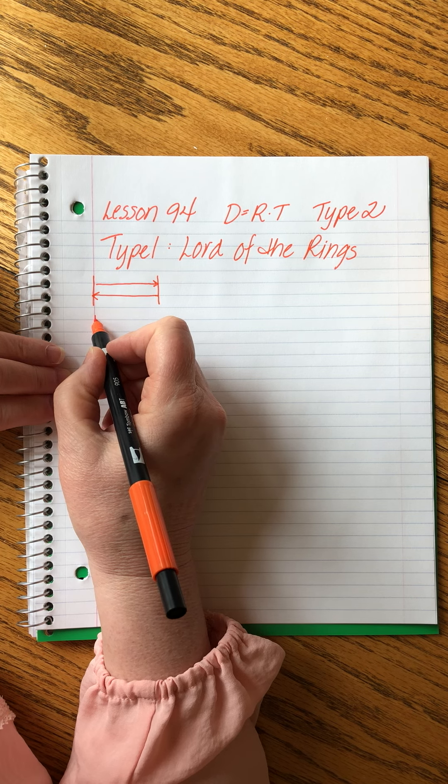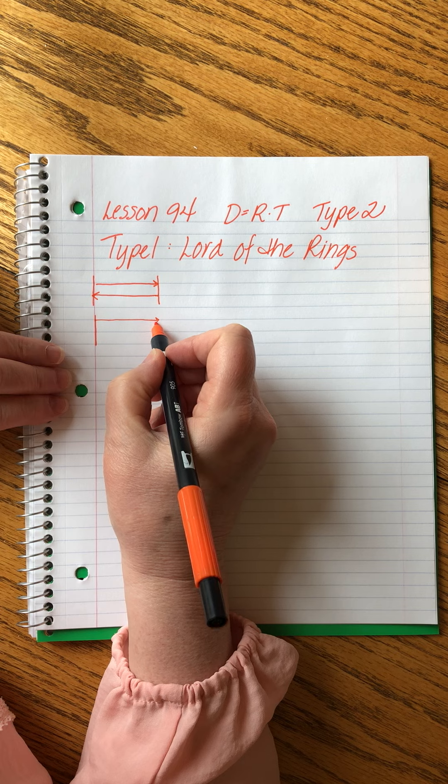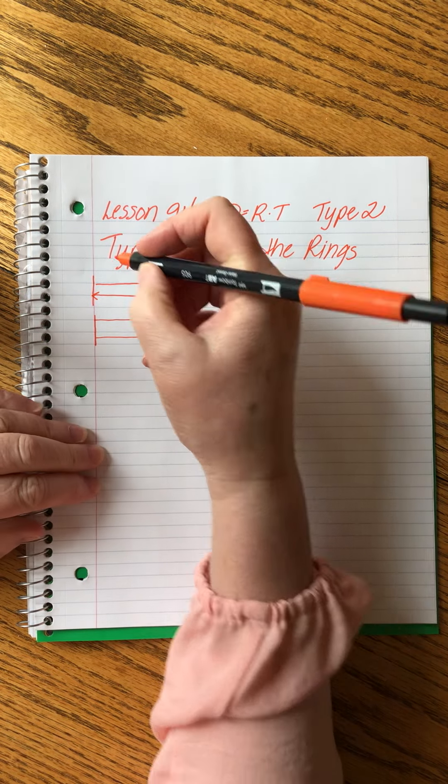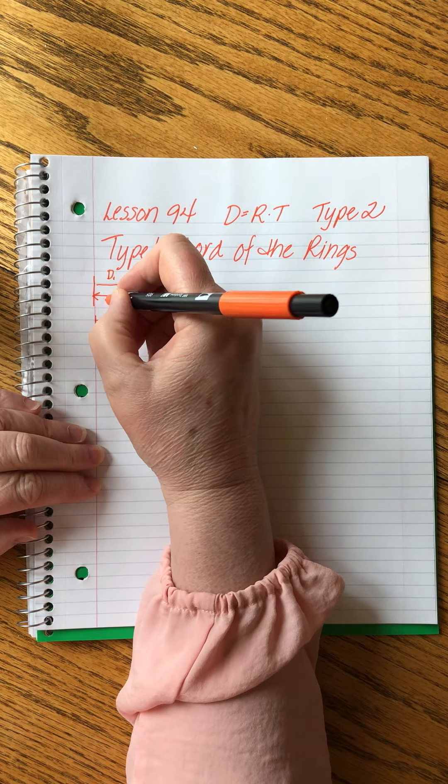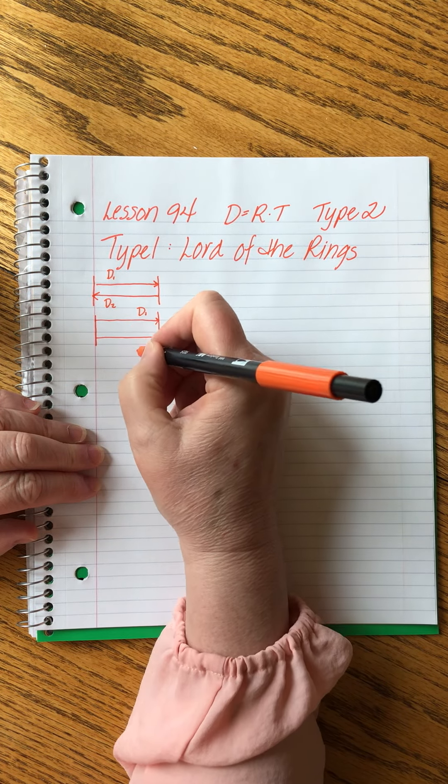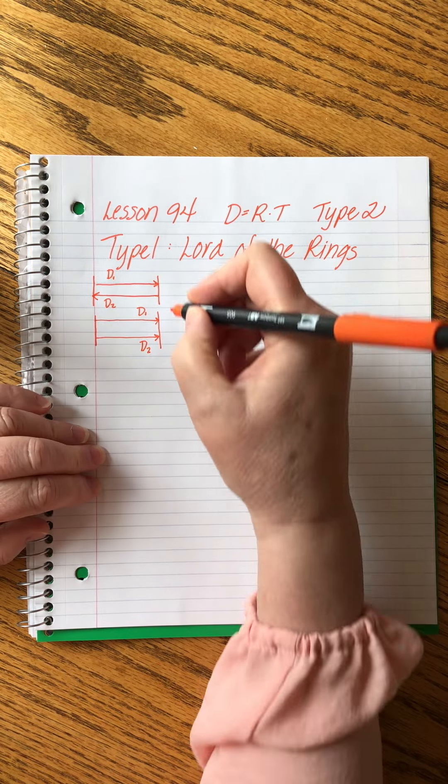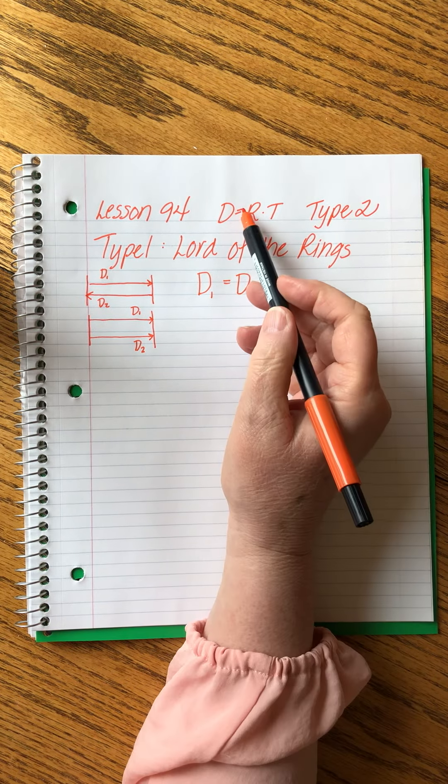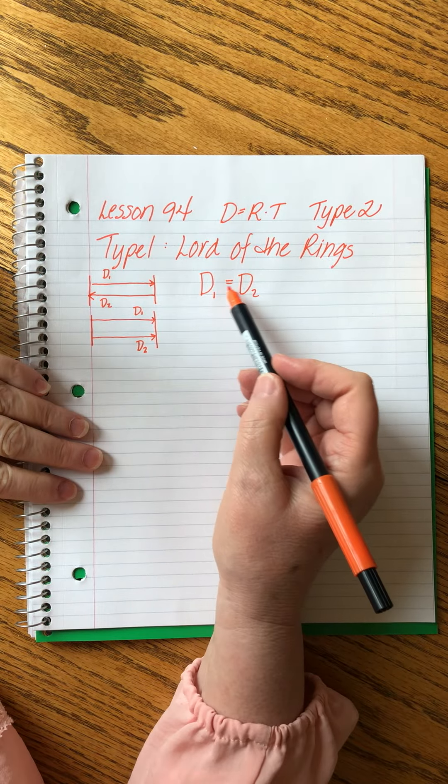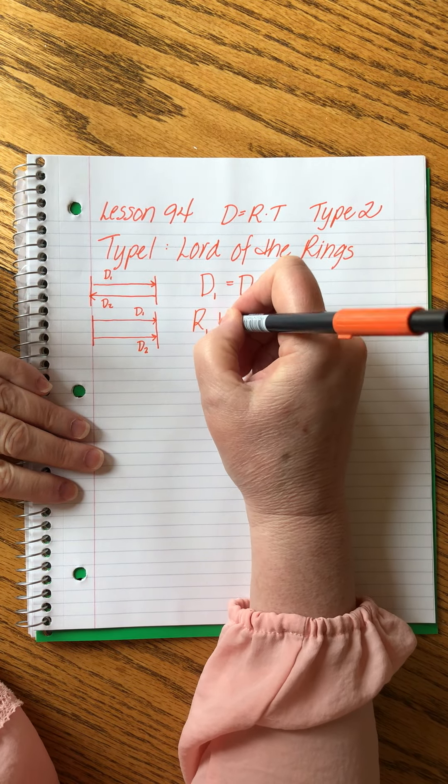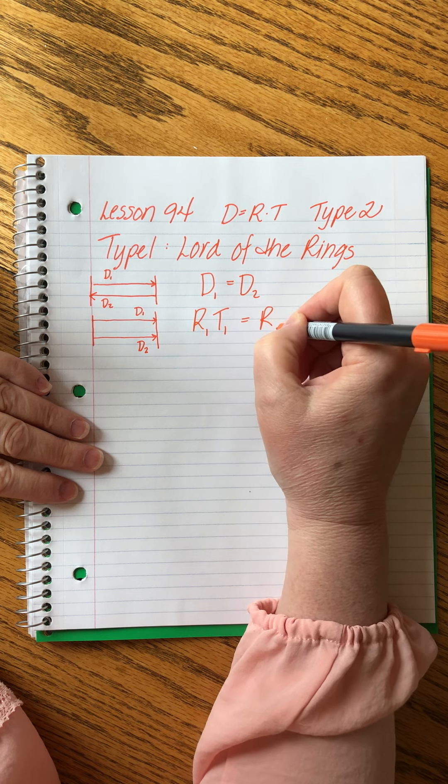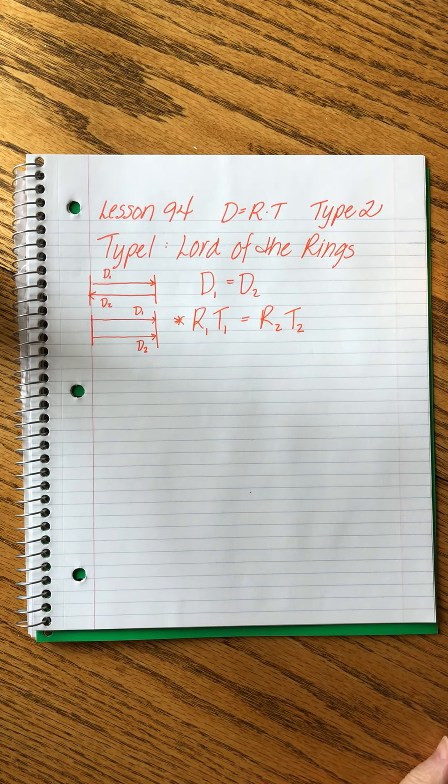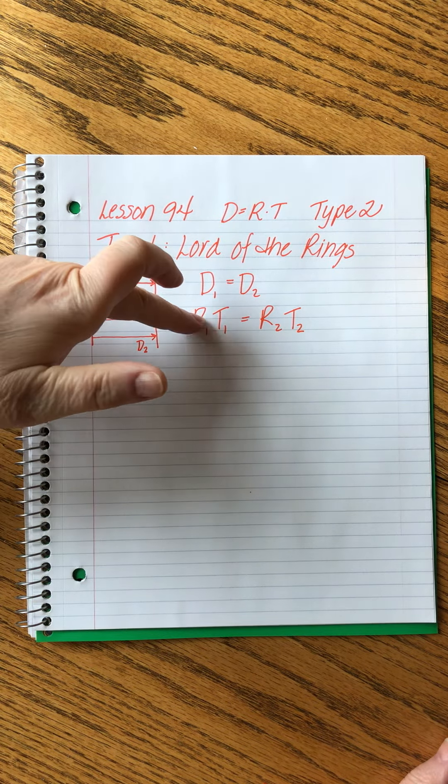They leave, Frodo leaves the Shire and goes to Mordor, Sam goes with him every inch of the way. They make the same trip. In both of these scenarios what you'll notice is that the first distance equals the second distance and so we can write a simple little equation that looks like this. D1 equals D2 and then we can remember that distance also equals rate times time so we can change each of these distances to be rate 1 times time 1 equals rate 2 times time 2.